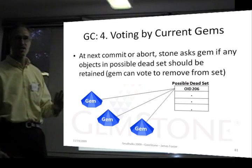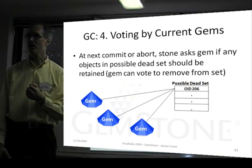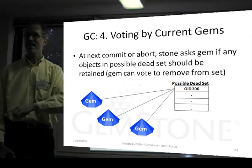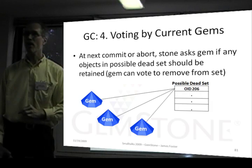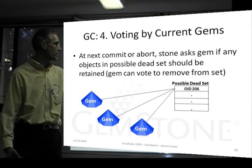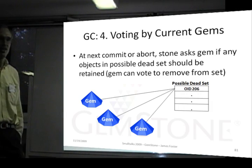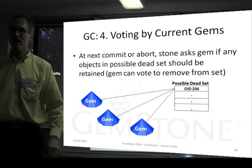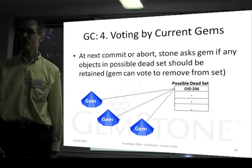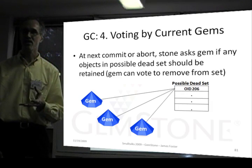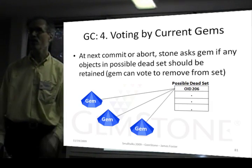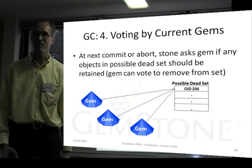Step four: the stone is holding this list of possible dead. The stone says to each gem as it commences, is anything in this list something that you are referencing? If so, we need to keep it. Gems can vote to remove things from the possible dead set — if you eliminate it, it won't be garbage collected and stays in the database. Each gem, when it commences next, will vote on whether there's anything there it needs to keep.